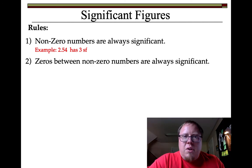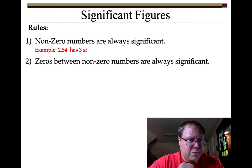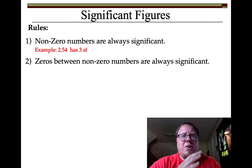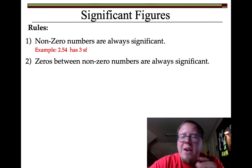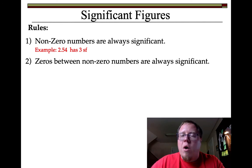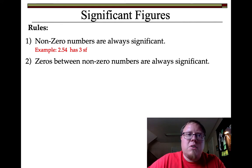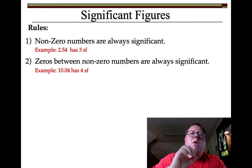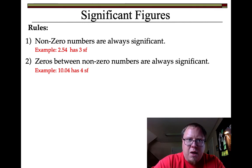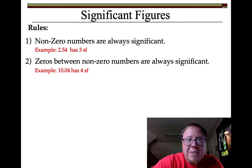The second rule — and actually the next four rules are all about zeros, because zeros are the ones that are tricky. Zeros that are between non-zero numbers, or any numbers you've already figured out are significant, are also going to be significant. This is best explained with an example: 10.04.